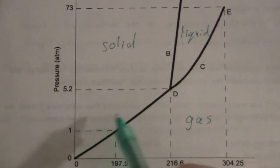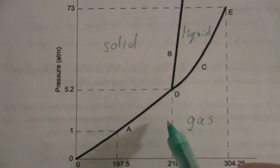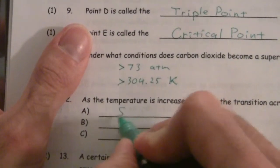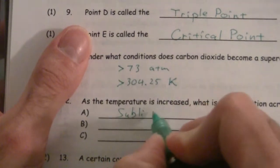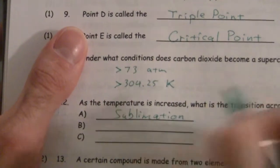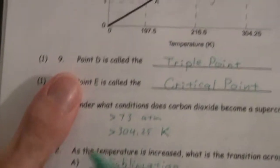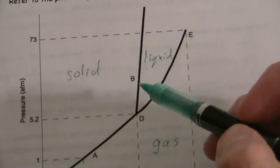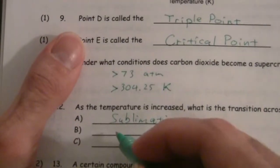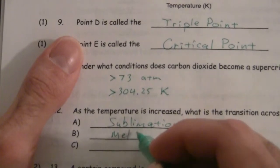So, the transition from solid to gas is called sublimation. This is just recall. And then, for line B, we're going from solid to liquid, so that is called melting. Nothing fancy there.